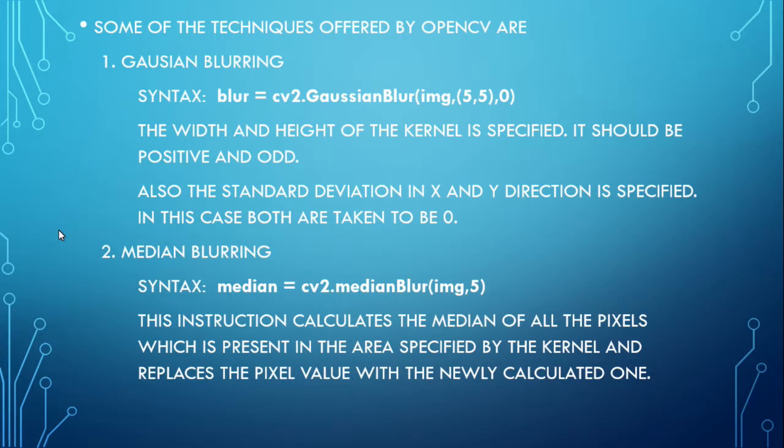Some of the techniques offered by OpenCV for this operation are Gaussian blurring. The syntax is: blur = cv2.GaussianBlur(img, (5,5), 0), where 5,5 is the width and height of the kernel specified. It should always be positive and odd. And the next 0 is the standard deviation in x and y-direction. If only the x-direction is specified, y-direction is assumed to be same as x-direction.